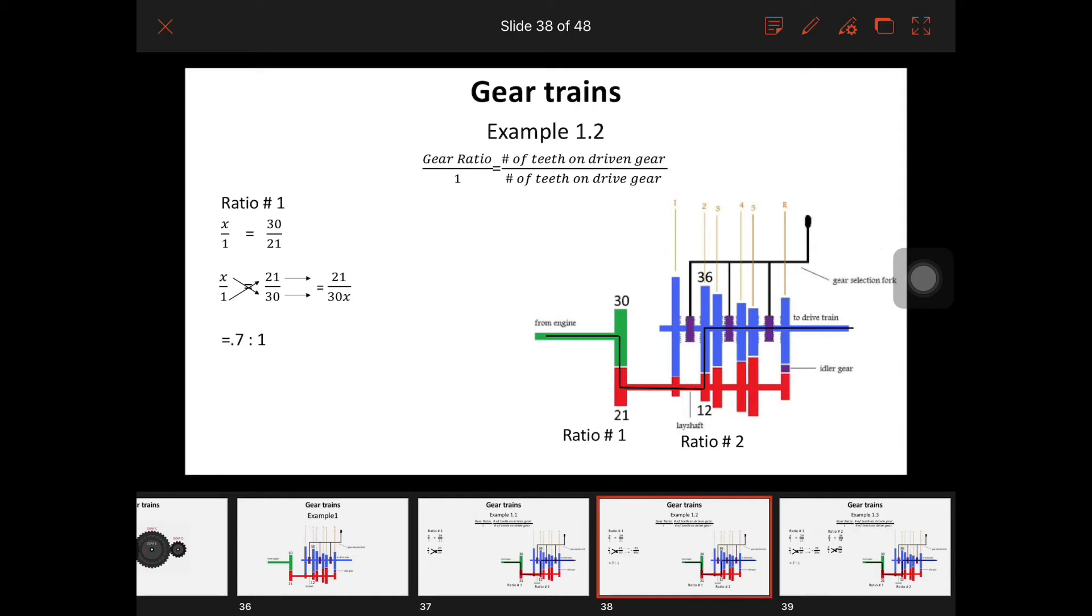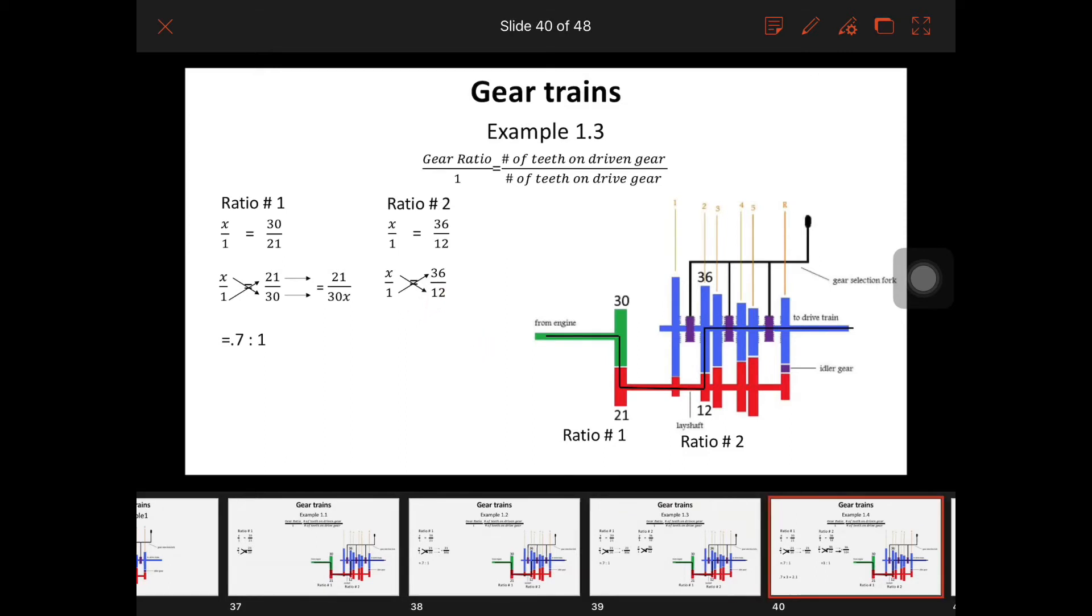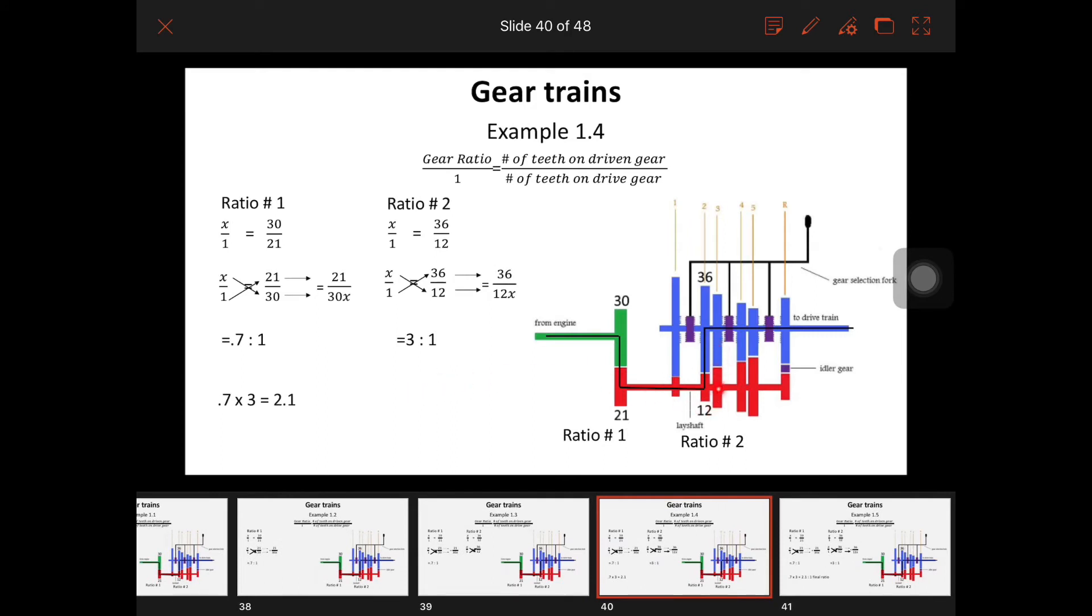Now we have to jump over and do ratio two. Our drive is 12 and our driven is 36, so we have to do that math again and come up with our second ratio, which is three to one. The important thing is that we have to multiply the ratio from both of those gears together to equal our true gear ratio. So our first ratio is 0.7 to one and our second ratio is three to one. If we multiply both together, our final ratio for second gear in this transmission would be 2.1 to one, which means the input shaft here is going to spin 2.1 times for every one revolution of the output.